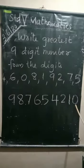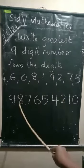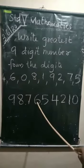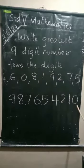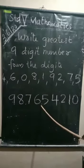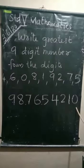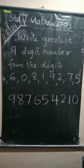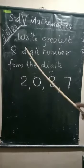So the descending order is: 9, 8, 7, 6, 5, 4, 2, 1, and 0. That makes the number 98 crore 76 lakh 54 thousand two hundred and ten. Understood? Next example.